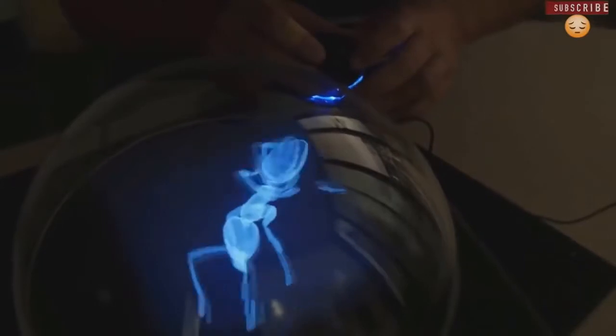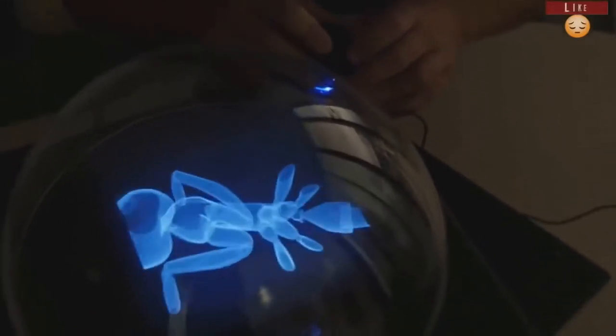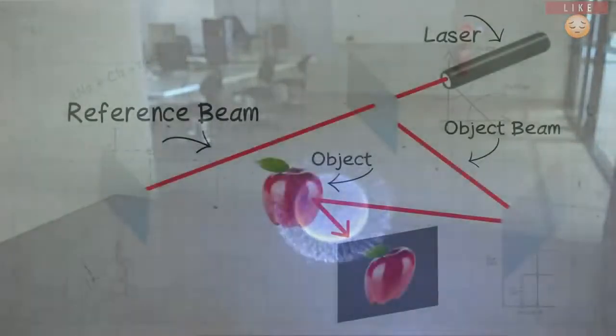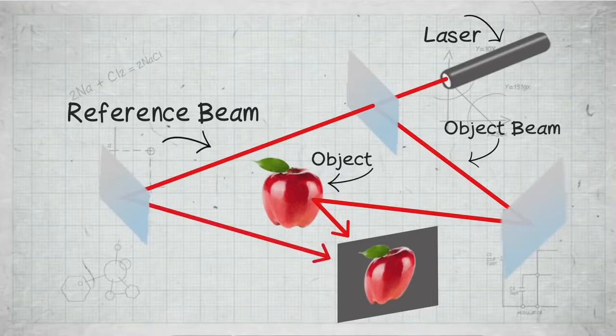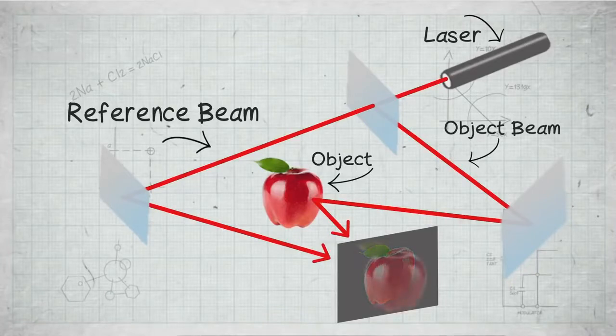Michael Talbot wrote, A hologram is produced when a single laser light is split into two separate beams. The first beam is bounced off the object to be photographed. Then the second beam is allowed to collide with the reflected light of the first. When this happens, they create an interference pattern, which is then recorded on a piece of film. As soon as another laser beam is shined through the film, a three-dimensional image of the original object reappears.